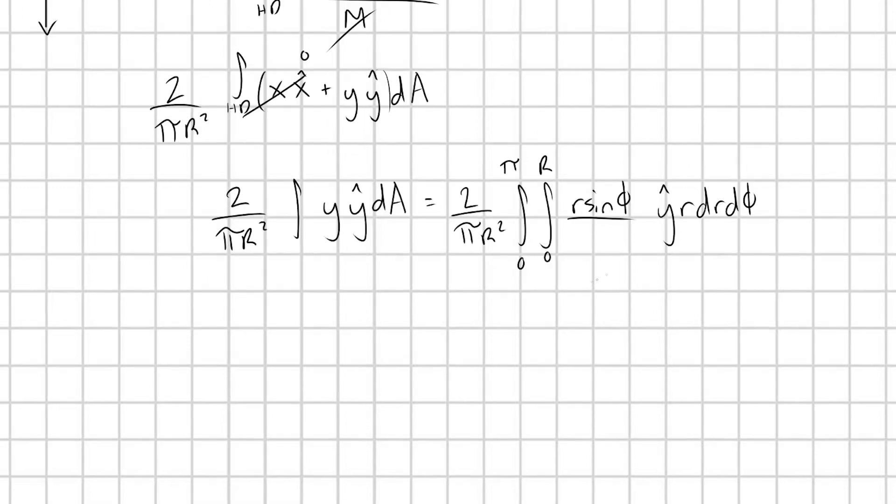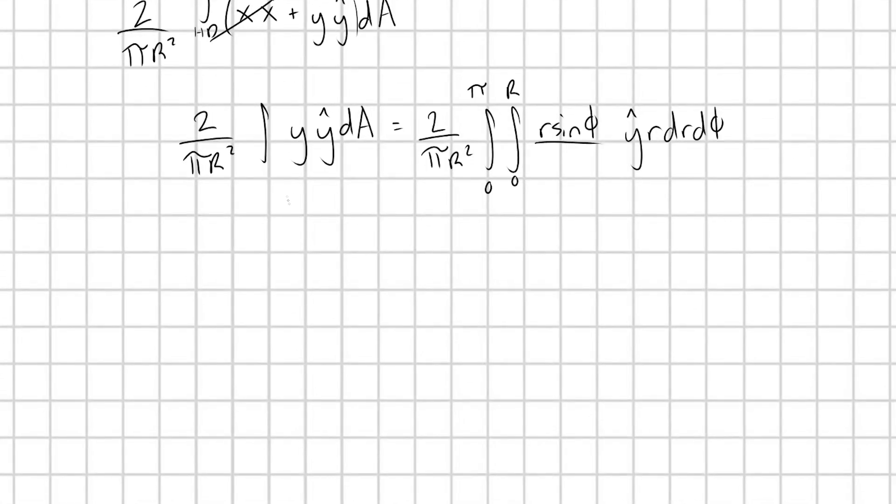All right, great. I'll go ahead and rewrite this integral one more time. 2 over pi R squared. Integral zero to pi. Integral zero to R. integral of r squared sine phi dr d phi in the y hat direction.